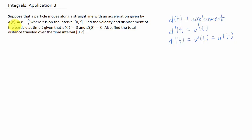In this problem, we're given the acceleration of a particle on an interval from 0 to 7. And we're asked to find the velocity of that particle and the displacement function for that particle, given a couple of initial conditions, that the initial velocity is 3 and that the initial displacement is 0. We also want to find the total distance traveled over the time interval 0 to 7.